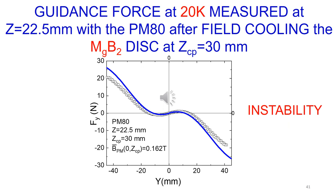Here the slope of the guidance force is positive near the origin and levitation is unstable. Instability is also shown by the calculation. See the blue line.